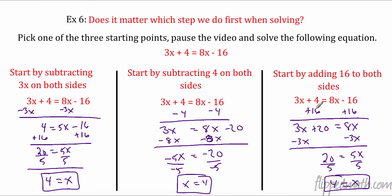The big key is this: when we have variables on both sides, you can choose what you want to start doing. Once you have both variables on the same side, the choices really kind of run out. Could you divide everything by 5 first and then add 16? You actually could do that, but it results in so many fractions that most students don't do it correctly. That's why I say do GEMDAS and solve backwards.